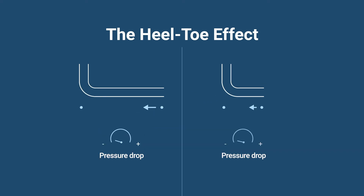Naturally, the longer the horizontal section and the longer the fluid has to travel, the higher the friction loss and the pressure drop is.